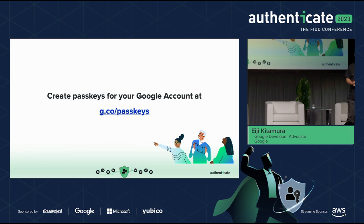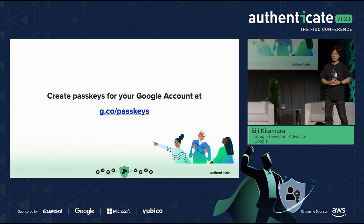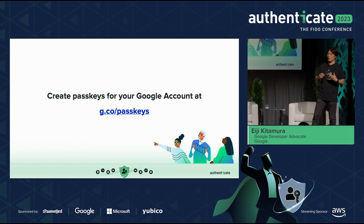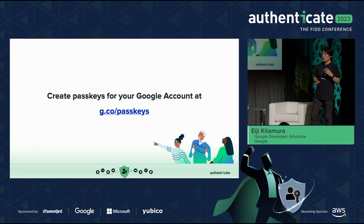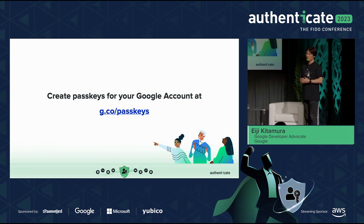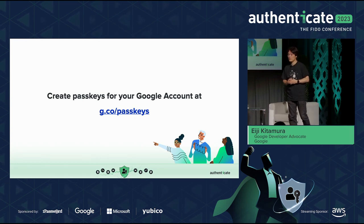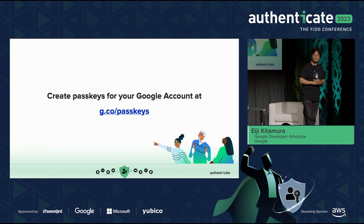64% of users find PassKeys easier than passwords, 62% find them safer than passwords, and only up to 10% find them less safe or harder to use. If you haven't created a PassKey yet, you can expedite and enable PassKeys through G.co/passkeys right now.